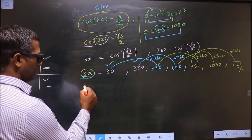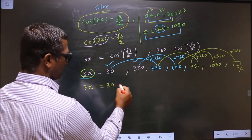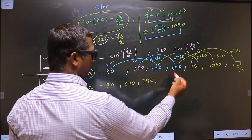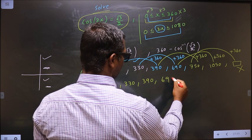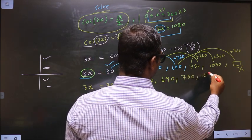So the values for 3x that we got are 30, 330, 390, 690, 750, and 1050.